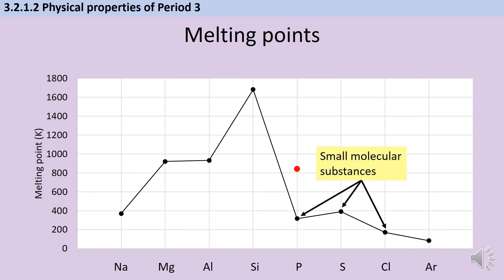For the sake of completeness, we can also mention that phosphorus actually has two very common allotropes, white phosphorus and red phosphorus. White phosphorus consists of those P4 molecules that we've just mentioned, and it has a melting point of around 320 Kelvin. Red phosphorus is actually a macromolecular structure, rather like silicon, and it has a melting point above 820 Kelvin.